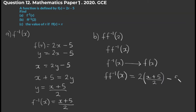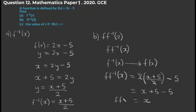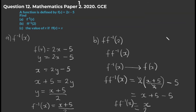We substitute f⁻¹(x) = (x + 5) / 2 where we had x in f(x) = 2x − 5. Simplifying: the 2 and 2 cancel, leaving x + 5 − 5, which gives us x + 0 = x. So f(f⁻¹(x)) = x. When we plug in the value 2, the answer is simply 2.